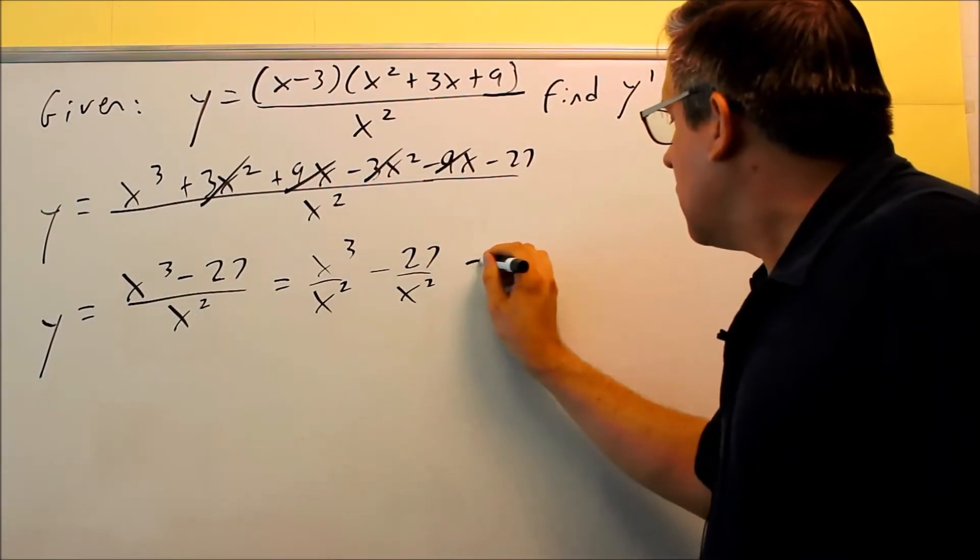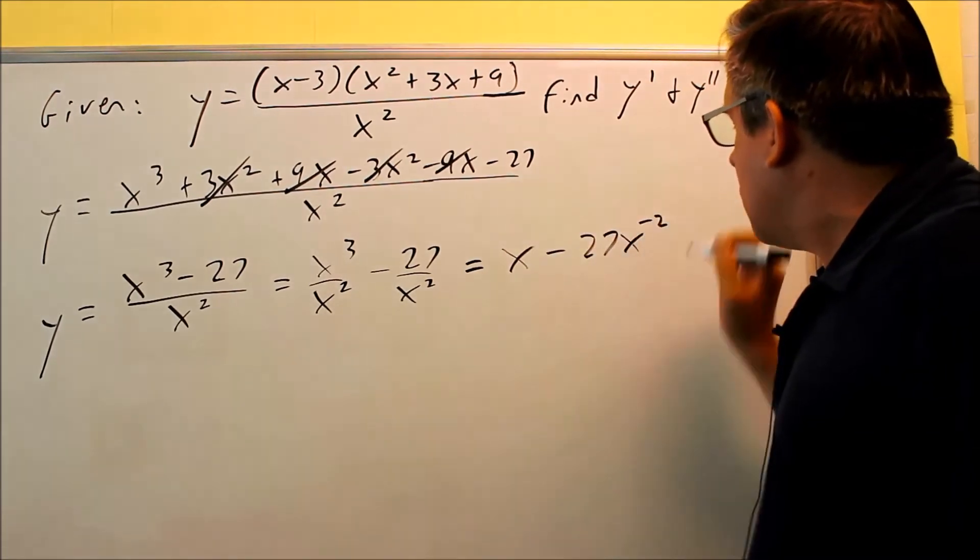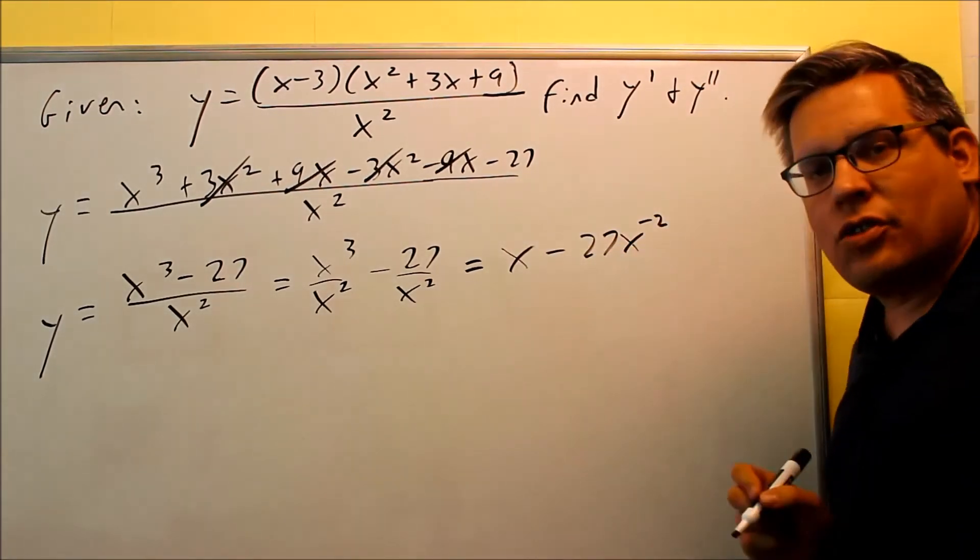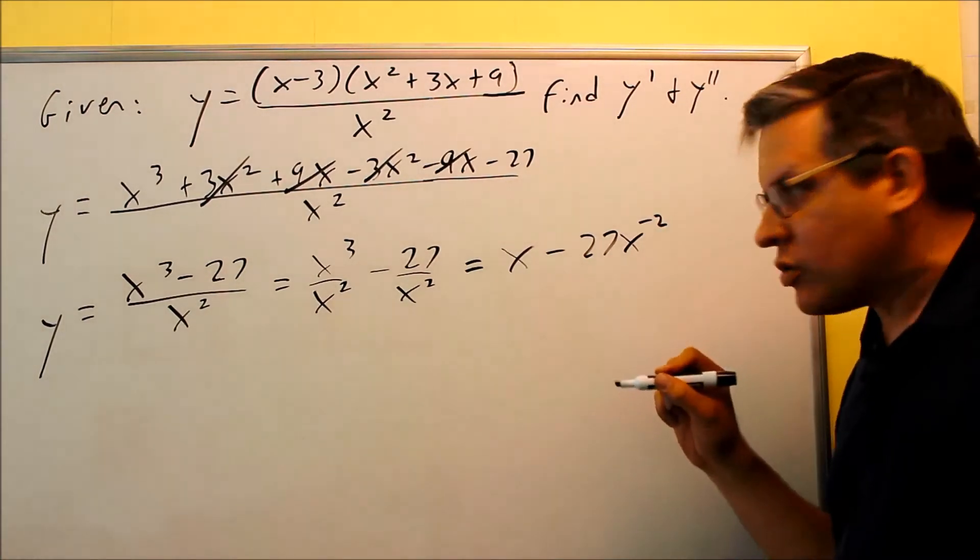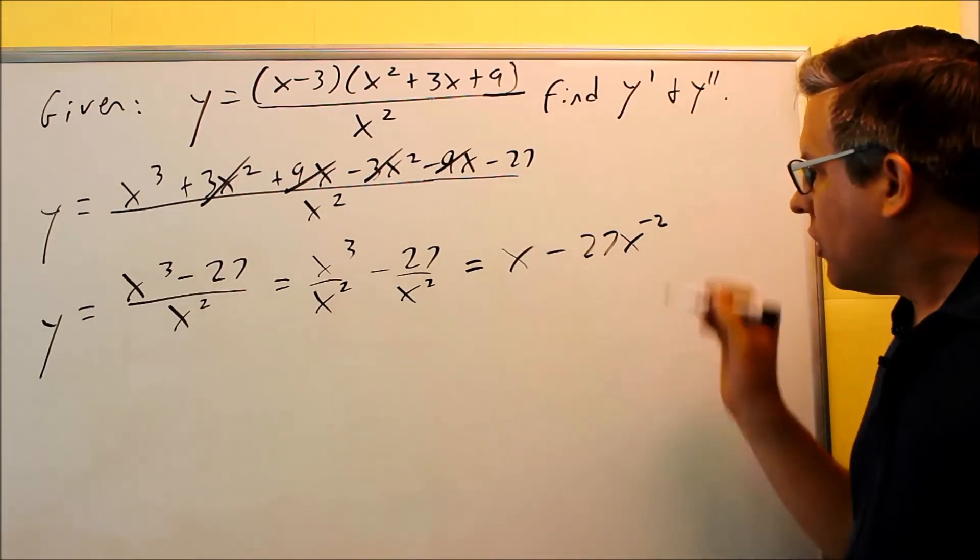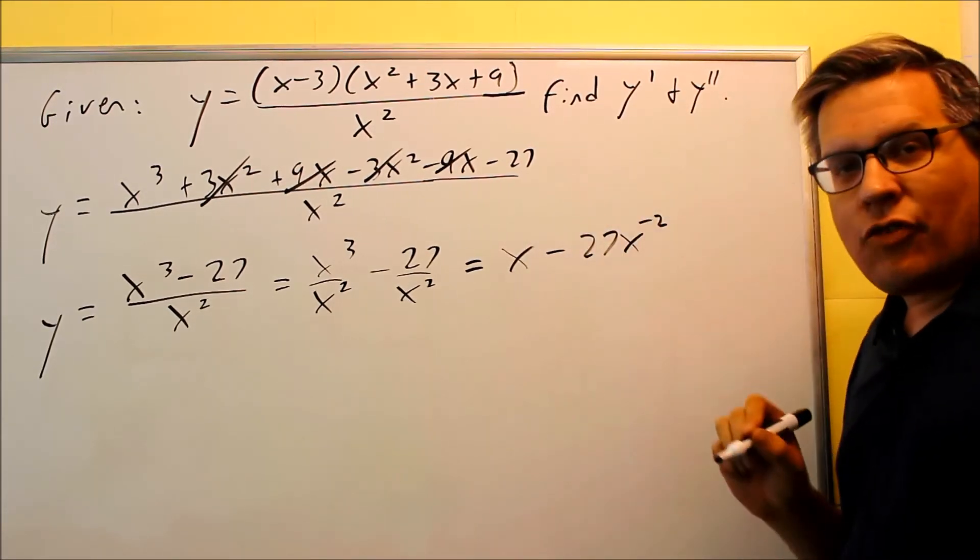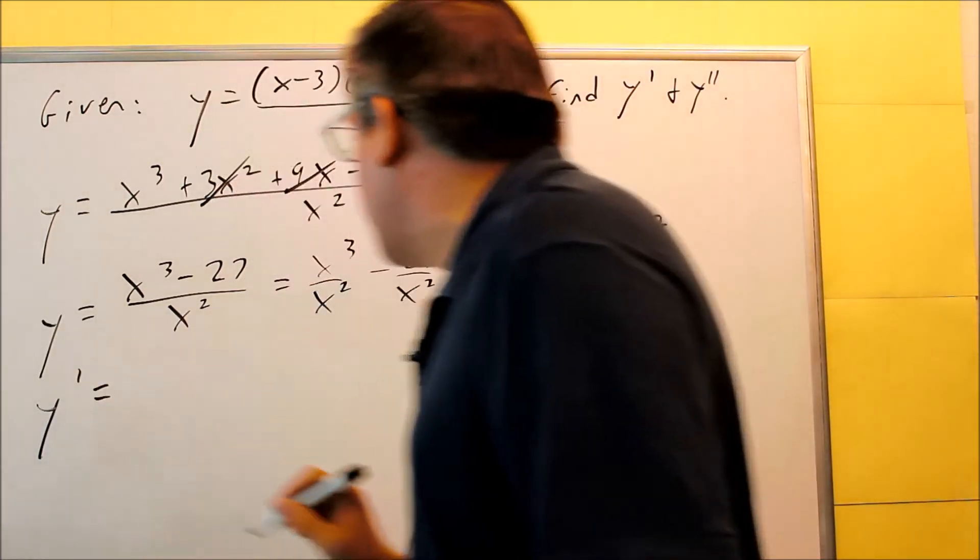That's going to leave you with x, and I'm going to write it this way. I'm going to write x minus 27x to negative 2, and the reason why is because I need to apply a power rule to this. It's better to keep it in this format, in the exponent form, so I can apply the rule. Okay, so now that it's in this form, I'm ready to find the first and second derivative. Let's first start with the first derivative.